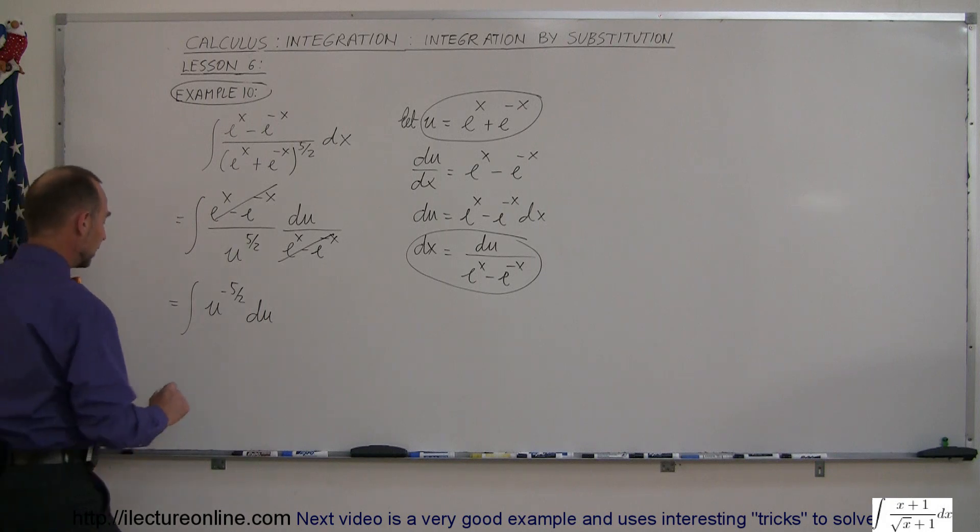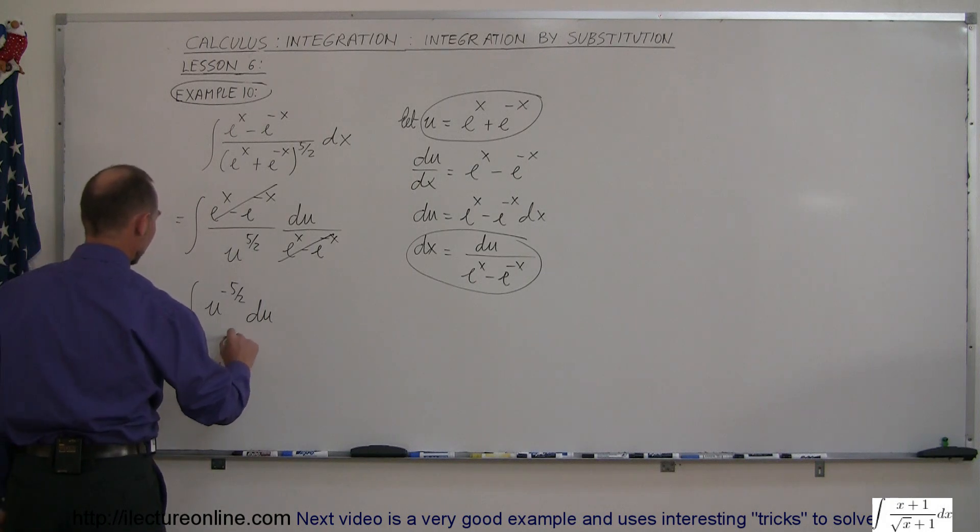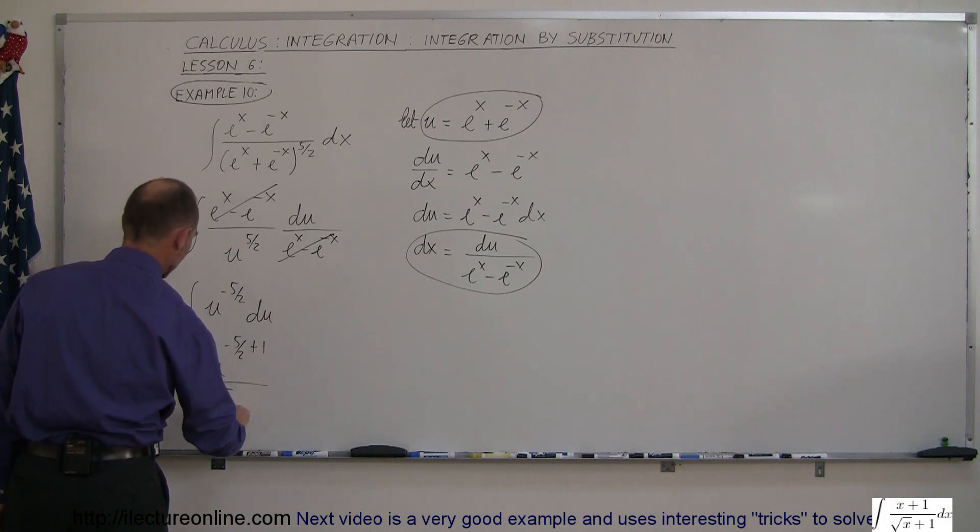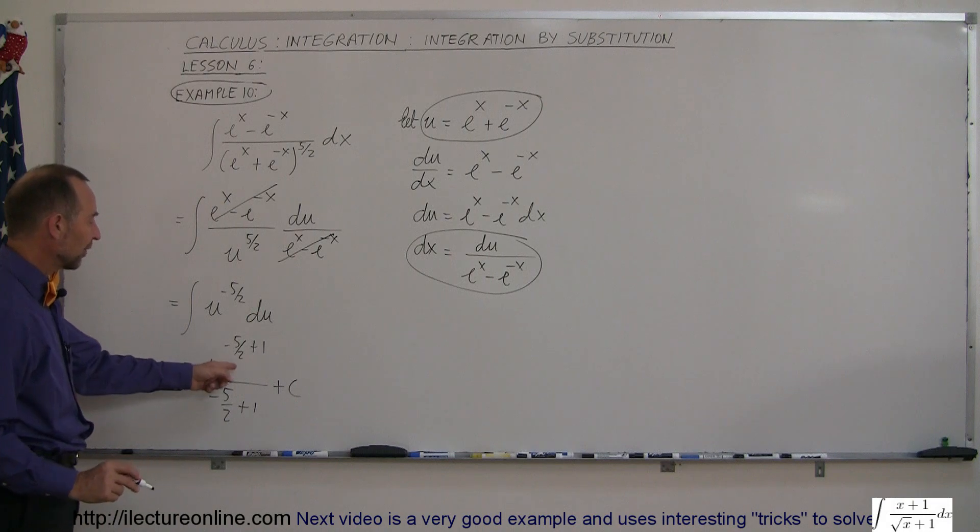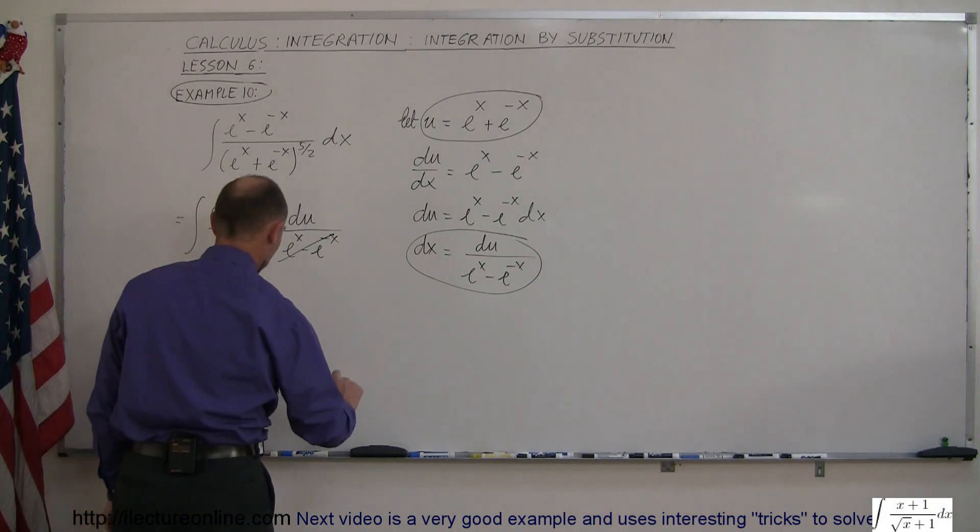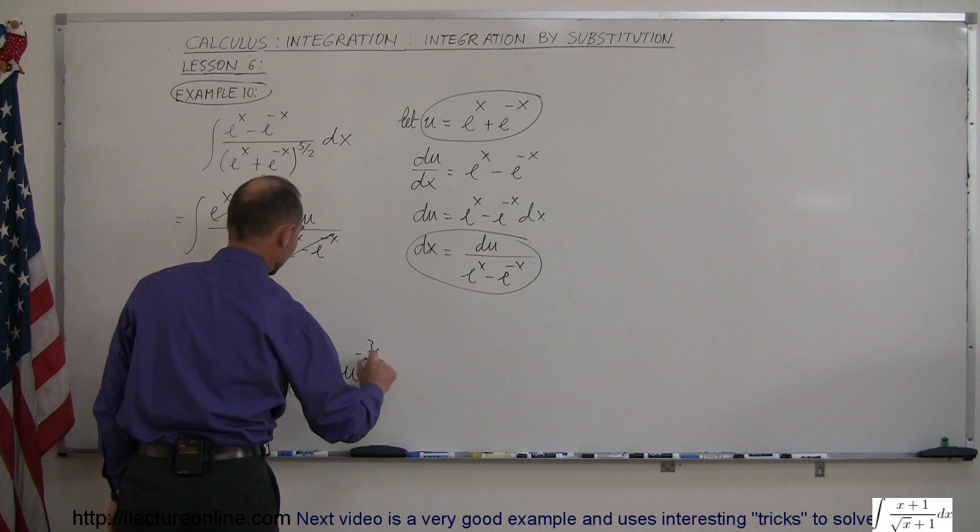So then we integrate, this is u to the minus five over two plus one, divided by minus five over two plus one, plus a constant of integration of course. And minus five halves plus one is minus three halves, so this is equal to u to the minus three halves.